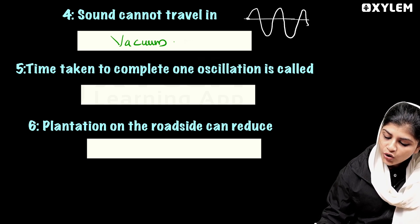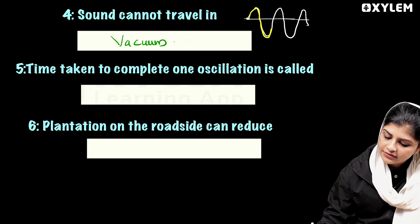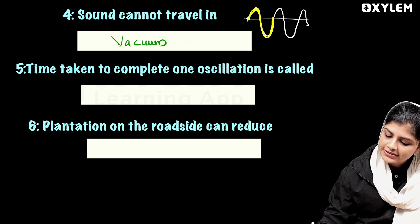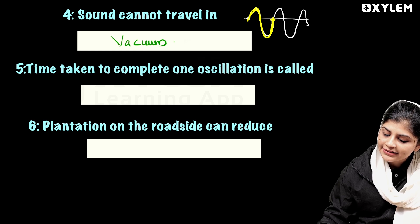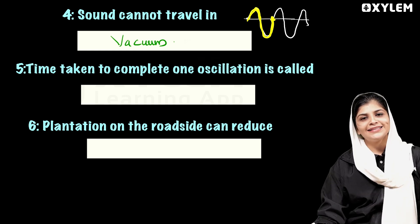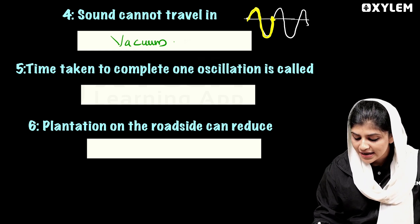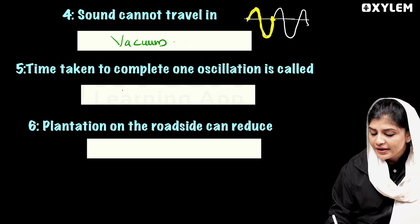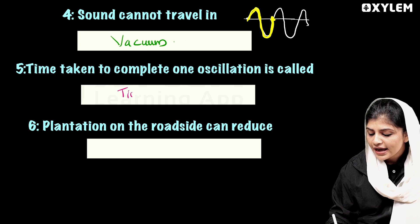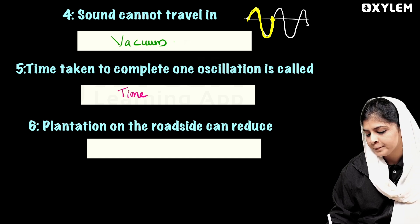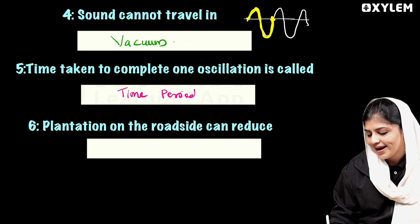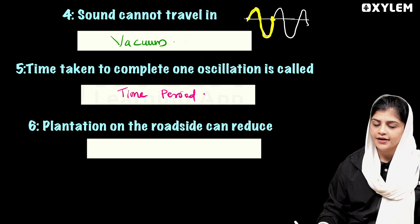Next: one complete oscillation — one trough and one crest — is called the time period. The time taken to complete one oscillation is called the time period.